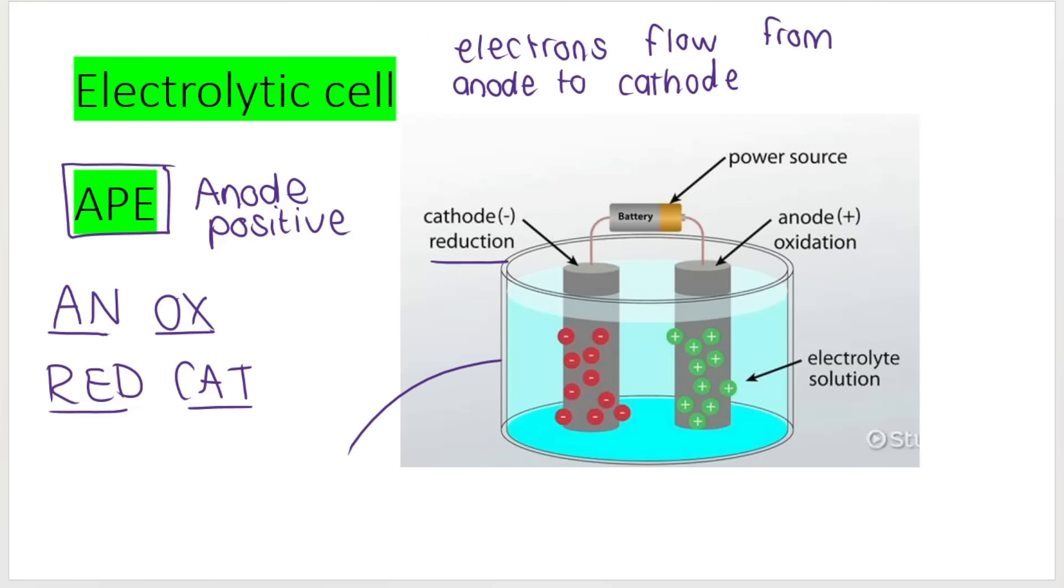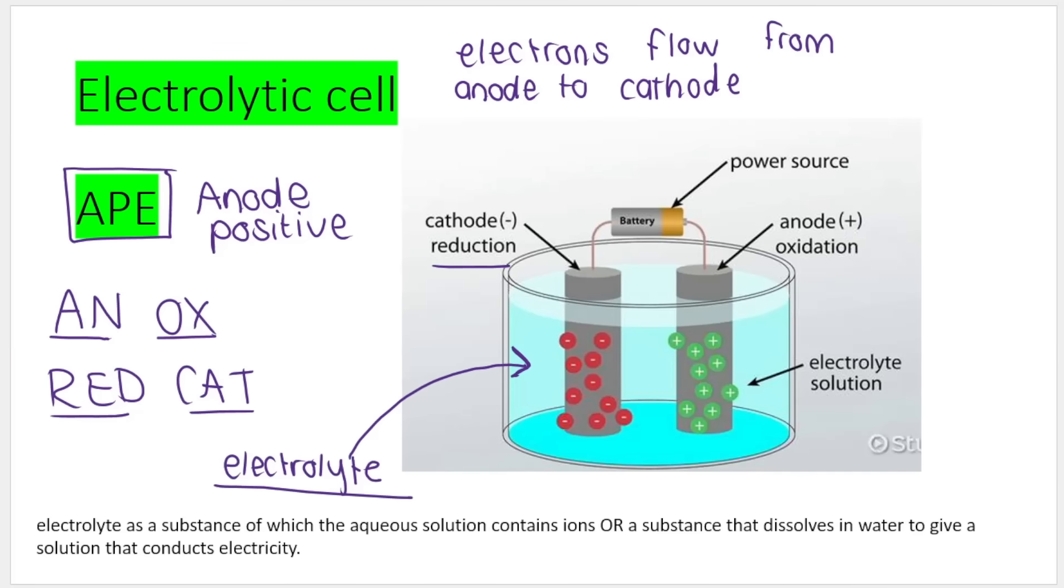And let's speak about what the electrolyte is. So the electrolyte, here's the definition of an electrolyte. It's a substance of which the aqueous solution contains ions or a substance that dissolves in water to give us a solution that conducts electricity. So it's very important to note that my electrolyte contains a molten ionic compound or solution of an ionic compound.